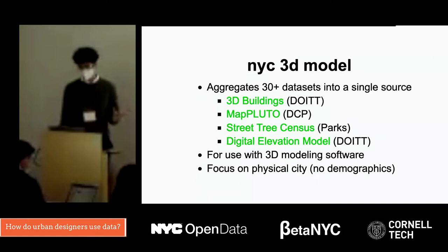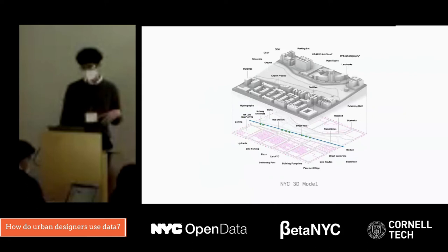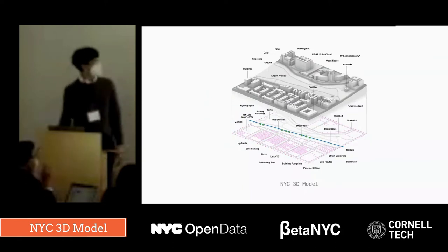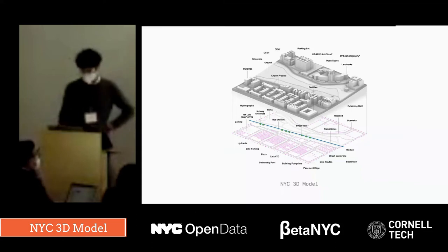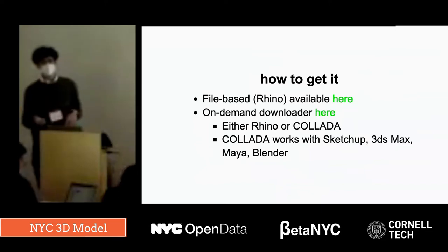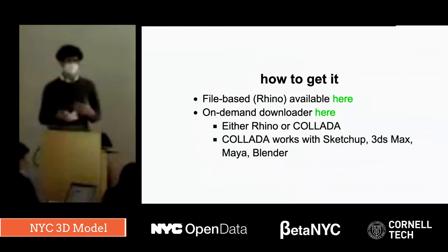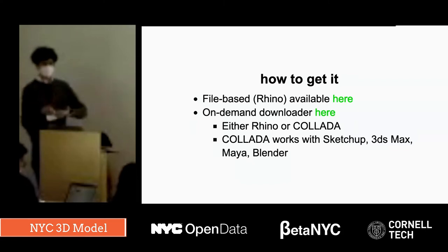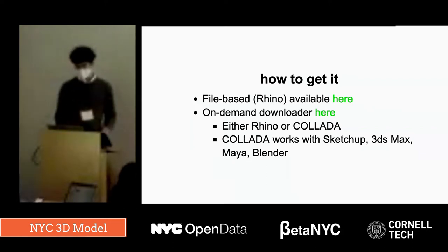This is really focused on the geometry of things in the physical city — not addressing demographics at all. There's buildings, tax lots, and weirder stuff like a dataset of where all the swimming pools are in the city. This has been around since about 2018. The old version was a file-based download where my predecessor and a couple of interns invested considerable time individually downloading each shapefile and file geodatabase, importing that into Rhino, converting it all, and putting it into individual layers — producing a file-based model organized by community district.